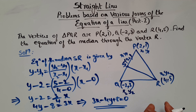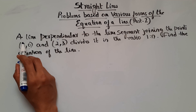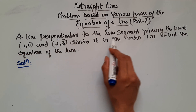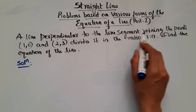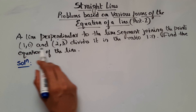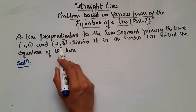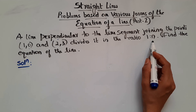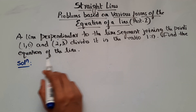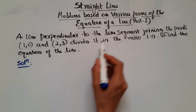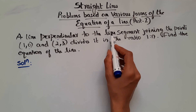Let's move on to the next problem. Here it says a line perpendicular to the line segment joining the points (1,0) and (2,3) divides it in the ratio 1 is to n. Find the equation of the line.